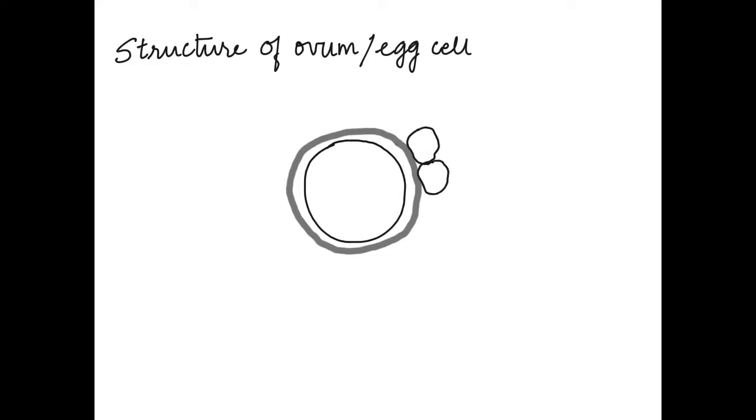These are the follicle cells. We know that ovum is a haploid gamete which is produced by the ovary and is released at the time of ovulation. This ovulation happens at the 14th day of the menstrual cycle.